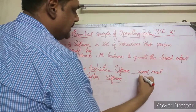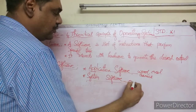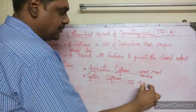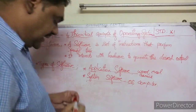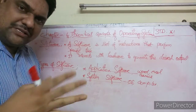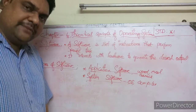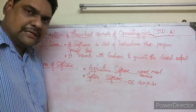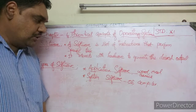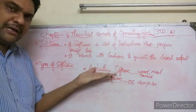Application software examples: Word, Excel, game software. System software examples: OS (operating system) and compiler software. A compiler converts high-level English instructions into binary language that the computer understands. So OS and compiler are both system software. System software is the first thing installed on a computer.